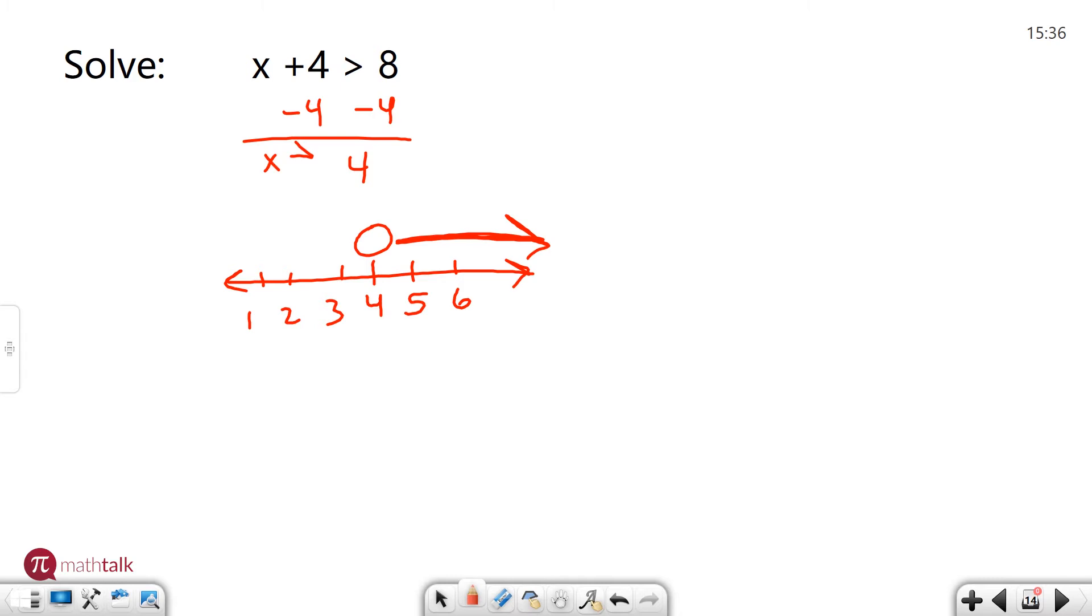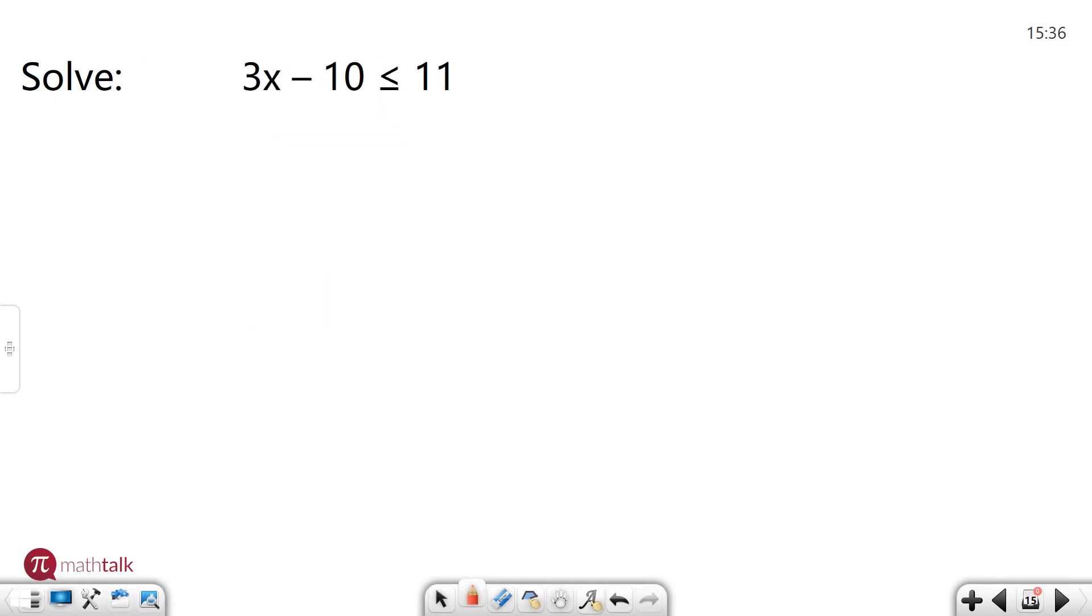So let's look at another example. This time I have a two-step inequality, which means I need two steps to solve it. So the first thing I'm going to do is add 10. And 11 plus 10 is 21. Now I need to divide both sides by 3. And I get x is less than or equal to 7.